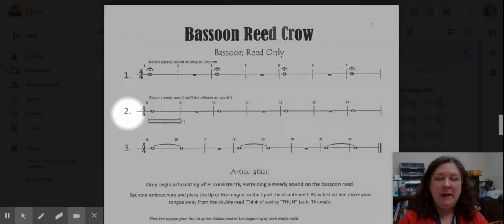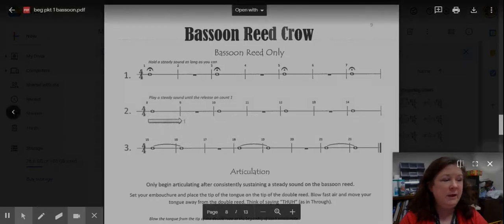On line two, we're going to do the same exercise. But this time, we are going to have a steady tempo. I'll set a metronome. We're going to play a steady sound until the release on count one. So, this will be tap, two, three, four. And then we're going to stop blowing the air on count one of the next measure. So, make sure you are tapping your foot as we do this.